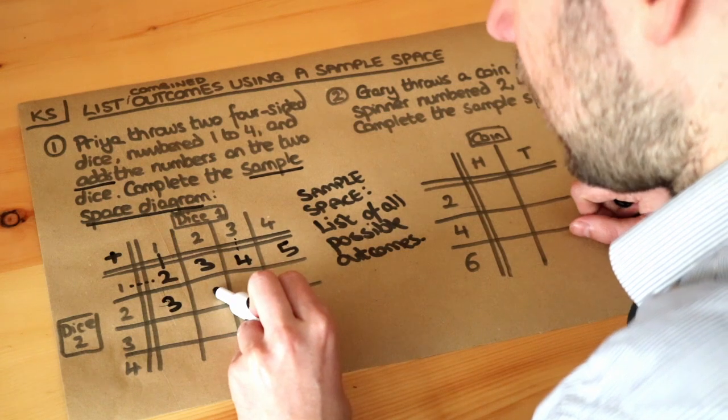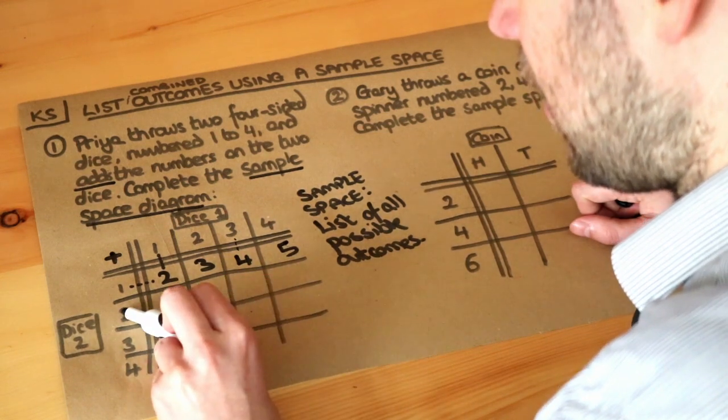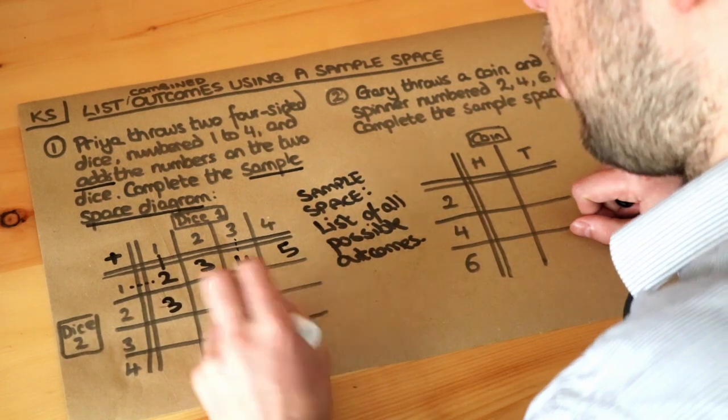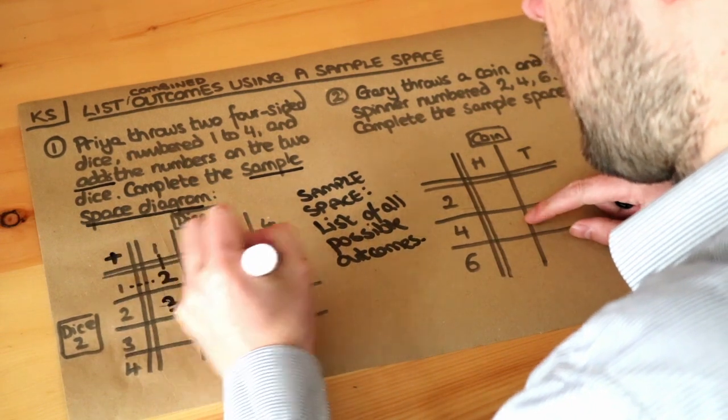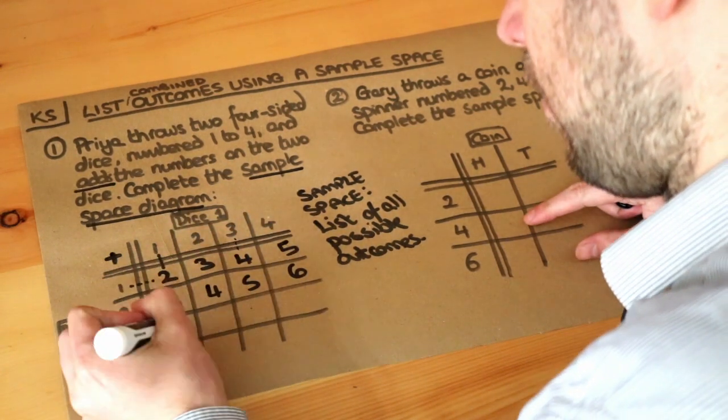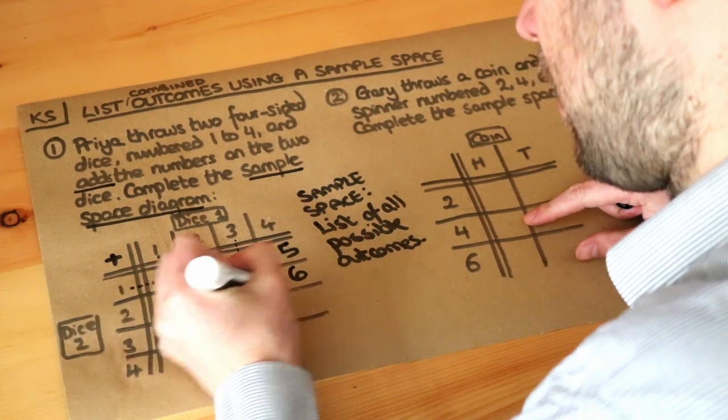We've got a two on the first dice and a two on the second dice. You can see in this row here, two plus two is four, then five, then six. Then one plus three is four, five, six, seven.